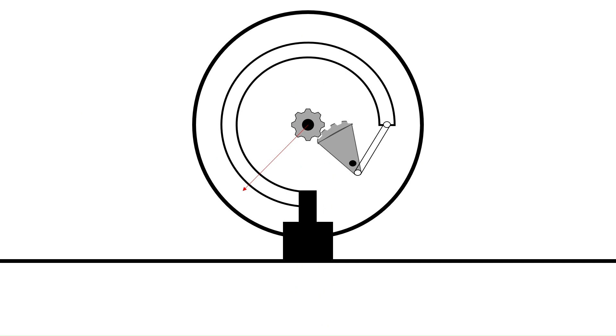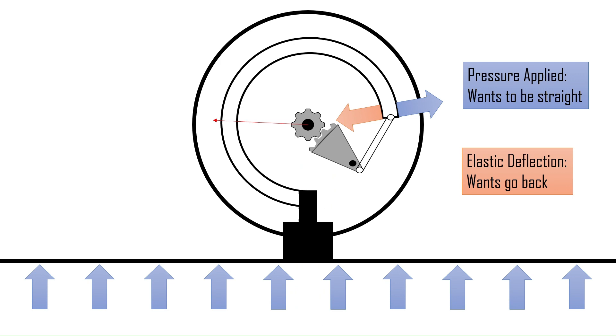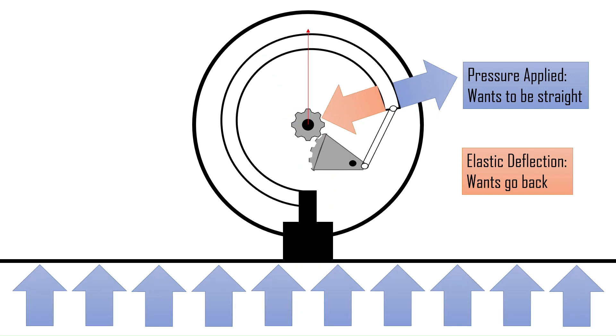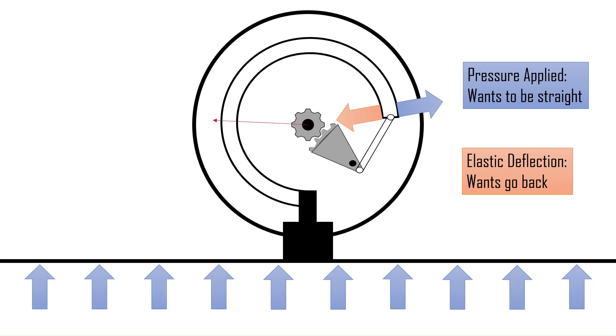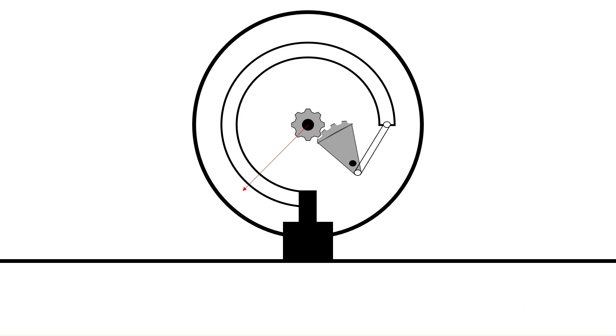In the Bordon tube, the straightening is resisted by the elastic deflection of the tube. Basically, the tube wants to stay in the shape it started in. As the pressure in the tube grows and deflects it away, the tube will fight harder to go back. When the pressure is relieved, it returns to its original position.